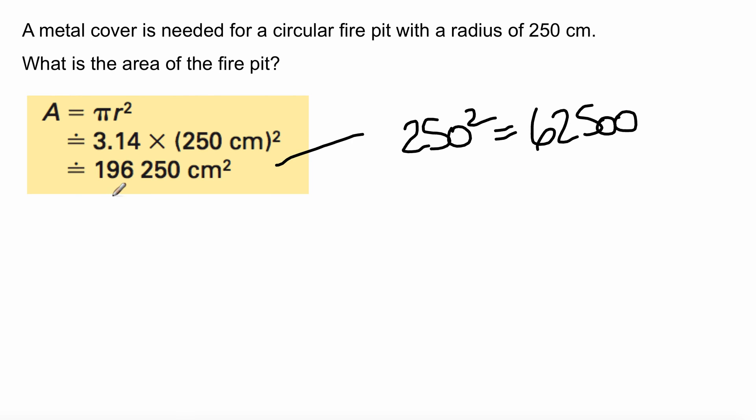250 squared is equal to 62,500. Alright, and then you're left with your answer that would be 3.14 times 62,500. Remember, you're using units that are squared because we're finding the area. Okay, and that's why it's centimeters squared. Alright, not just centimeters.